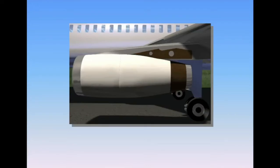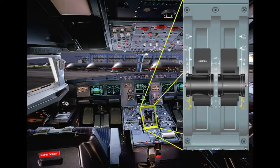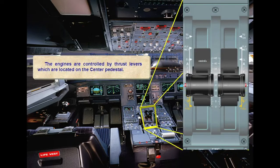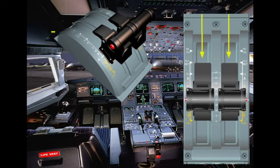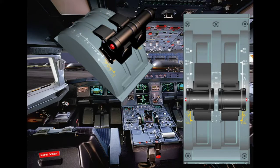Each engine is equipped with reversers. The engines are controlled by thrust levers, which are located on the center pedestal. Just behind the thrust levers, these two levers control the reversers. The auto thrust can be disconnected using the two red buttons, which are called instinctive disconnect push buttons.